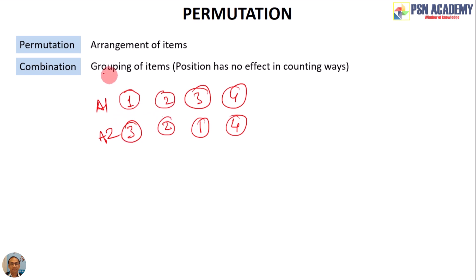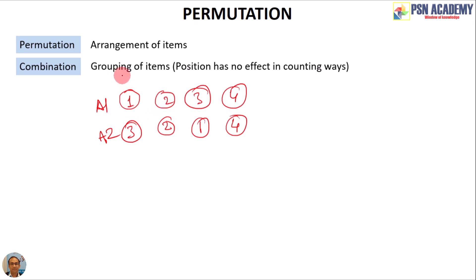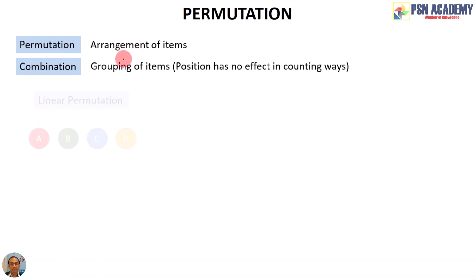When we talk about combination, we talk about the grouping of those items. These two arrangements belong to the same group because items 1, 2, 3, and 4 are all involved in both arrangements. The arrangement may differ — somebody comes in front, somebody goes to the third position — but they belong to the same group. That grouping is combination, and the different arrangements are called permutations.